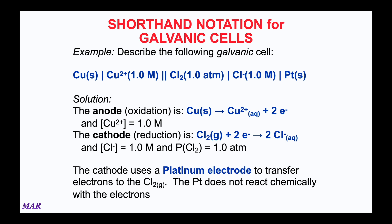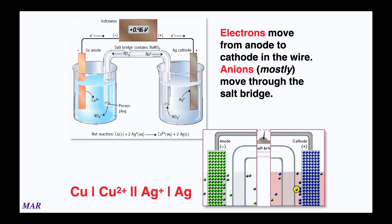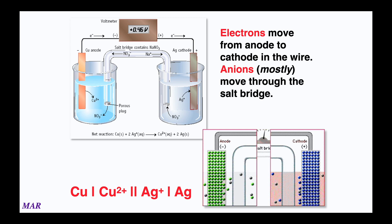In a voltaic electrochemical cell, oxidation occurs at the anode. Electrons released at the anode travel through a wire to the cathode, where they are consumed in a reduction reaction. Anions are then shuttled through a salt bridge from the cathode compartment to the anode compartment; otherwise, a net negative charge would build up in the cathode compartment. The negative charges move in a circuit through the cell.